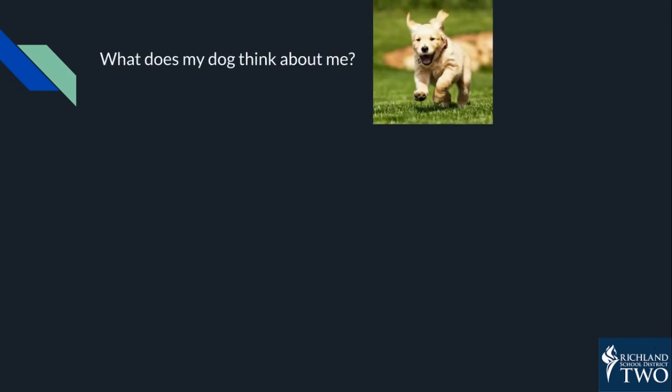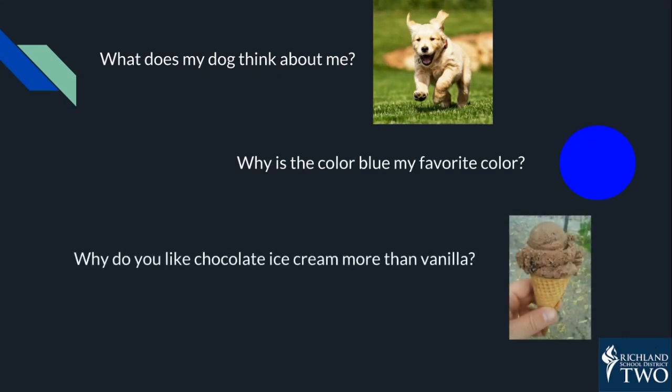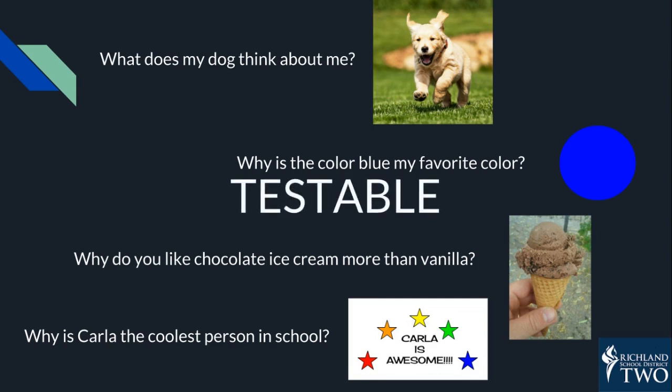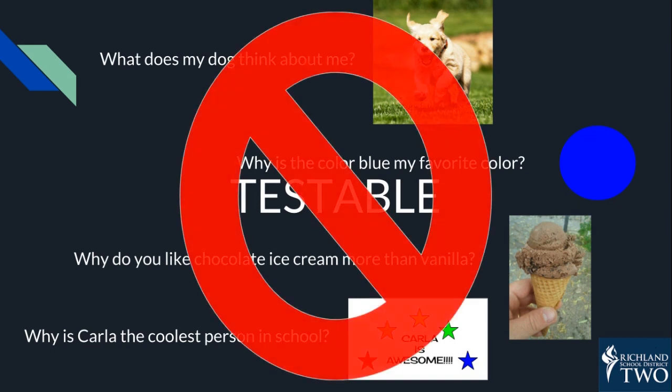What does my dog think about me? Why is the color blue my favorite color? Why do you like chocolate ice cream more than vanilla? Why is Carla the coolest person in school? These are questions that are more or less based on opinions. You would have a really hard time getting observations or measurements that would provide a reliable answer to these questions. This means we cannot do a scientific test to answer them. They are non-testable questions.